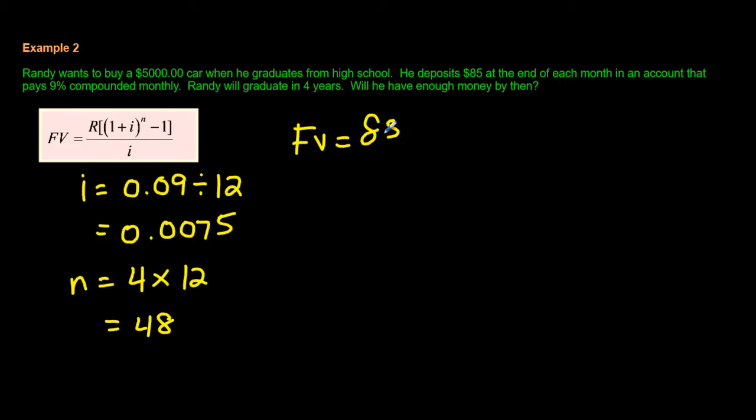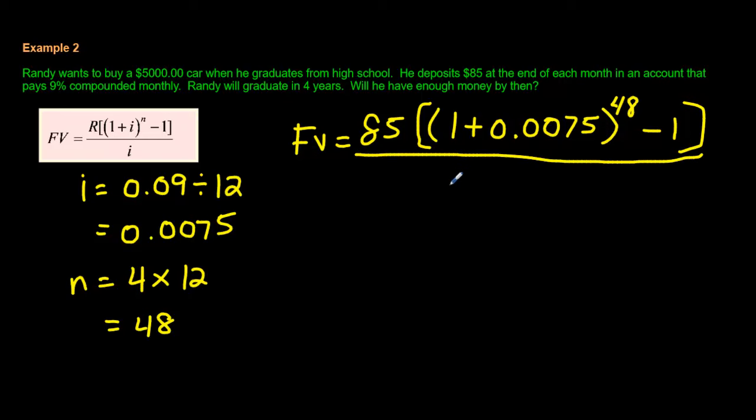85. And then big bracket. 1 plus i is 0.0075. n is 48. Then there's a minus 1. All over top of, again, 0.0075.